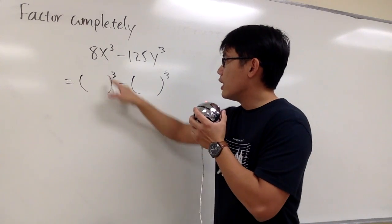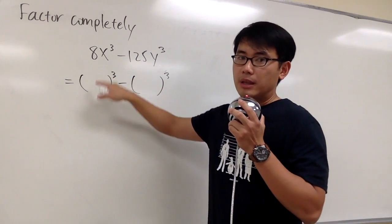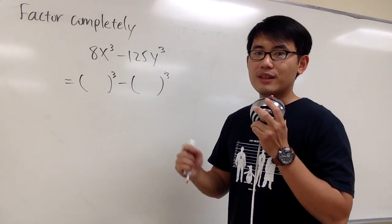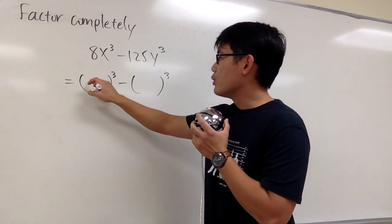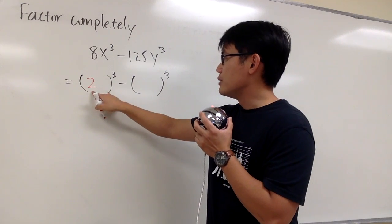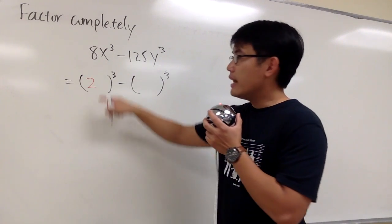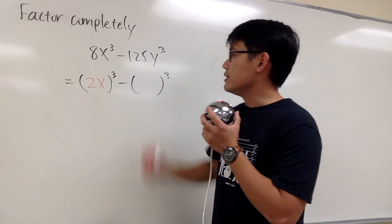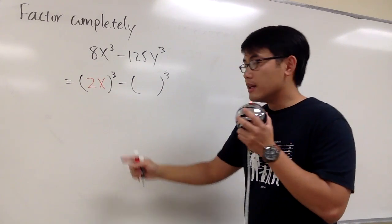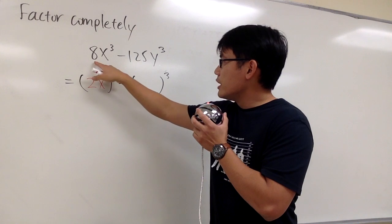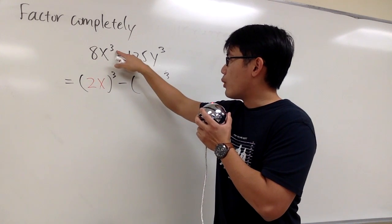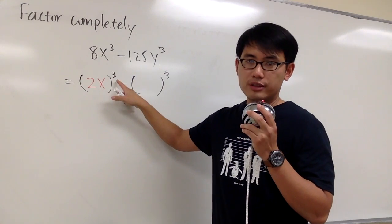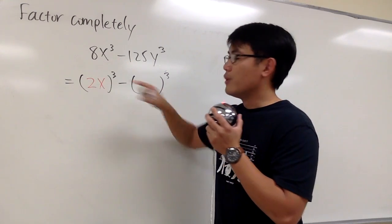For the first parentheses, this right here was an 8, but then to put it into the parentheses, we have to think about what times what times what will give us 8. And the answer to that will be 2 — 2 times 2 times 2 will give us 8. And then this is x to the third power, but I can just put in the parentheses just an x. So originally we had 8x to the third power, but then I changed that to 2x in the parentheses raised to the third power. In fact, they are equivalent.